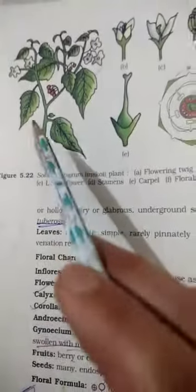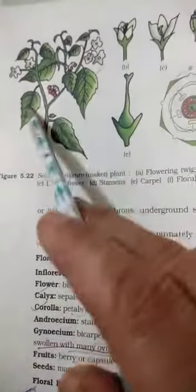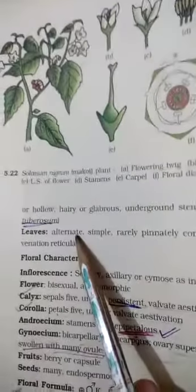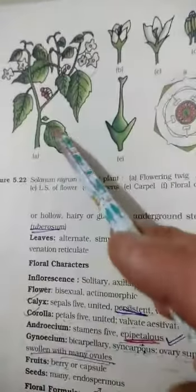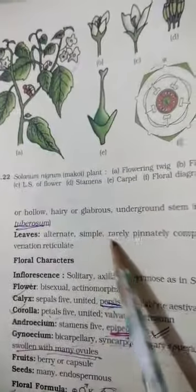Leaves are alternate. As you can see, one is this side and one is this side. So these are called alternate leaves. This is simple, as you can see here it is not divided further.